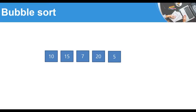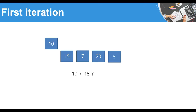Let's suppose that we have a list of five numbers: 10, 15, 7, 20, and 5, and we need to sort this list using bubble sort. As we said, in bubble sort we have to pass through this list, compare each pair of items, and then swap them if they are in the wrong order. We would have to perform several different iterations. Let's start with the first iteration.